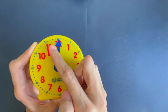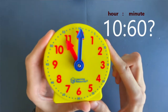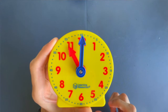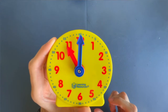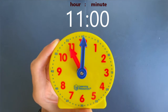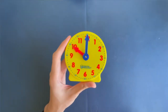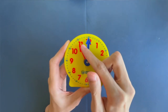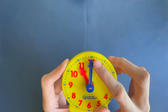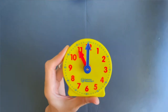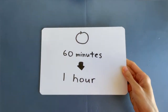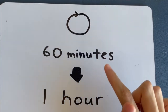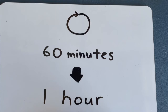And finally — is it 10:60? No, it is actually 60 minutes past 10, which is also known as 11 o'clock. So now we have learned that when the minute hand travels one round around the clock and stops right back here, 60 minutes has just passed. And 60 minutes is also known as one hour. When the minute hand travels one round around the clock, 60 minutes — one hour — has passed.